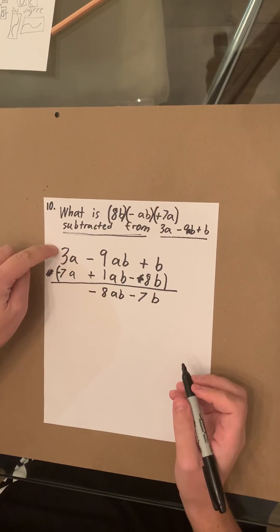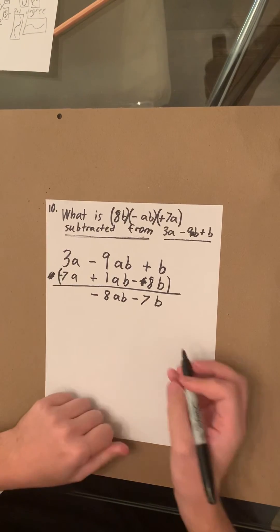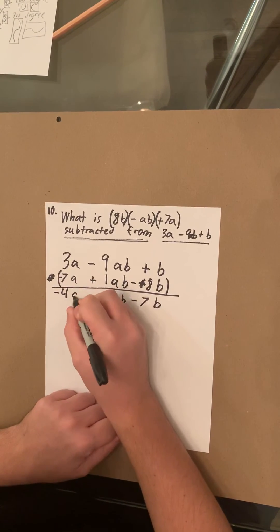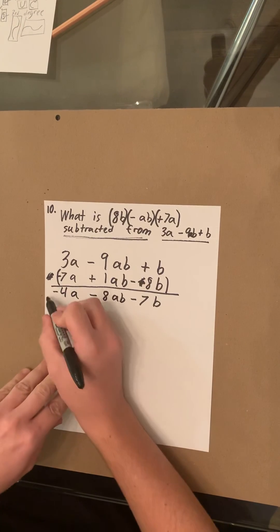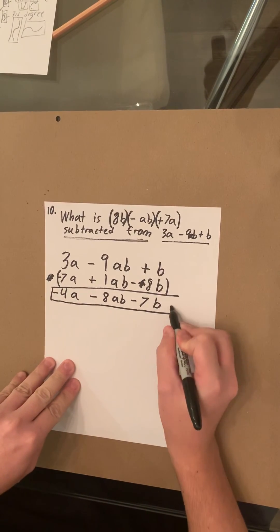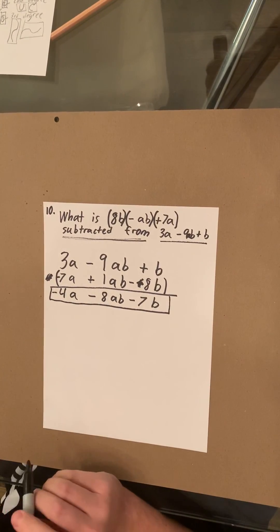And then 3A minus 7A is negative 4A. So your answer ends up being negative 4A minus 8AB minus 7B.